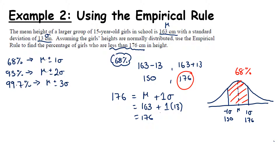But the answer isn't 68%, because the question asks for the percentage of girls who are less than 176 — so I also want everything to the left. I'm missing quite a substantial piece — everything to the left of the minus-one-standard-deviation line.